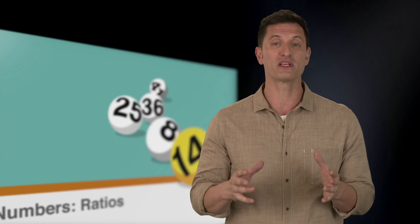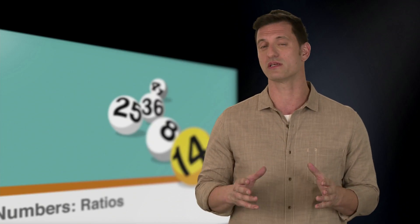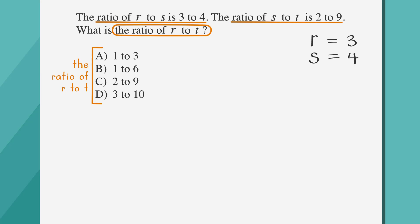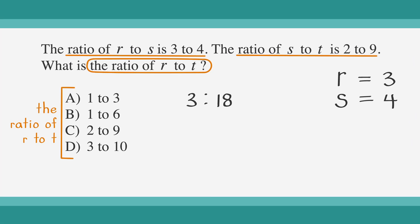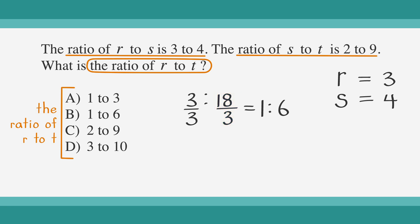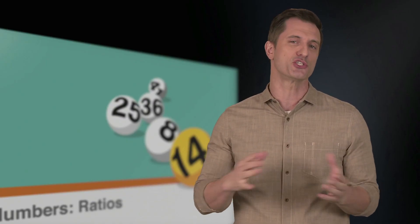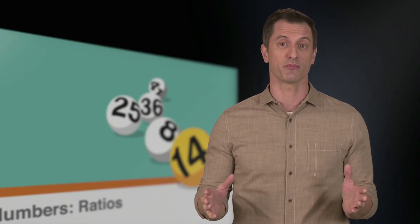Remember to always simplify the responses you get, unless your options are unsimplified. We can simplify r to t by dividing both by the greatest common factor, which is 3. That leaves us with 3 over 3, which is 1, and 18 over 3, which is 6. So the ratio of r to t is equal to 1 to 6. Looking at our answer choices, choice B is the right answer. Whenever you have a question that asks for the ratio between two unknowns, you can always pick numbers.